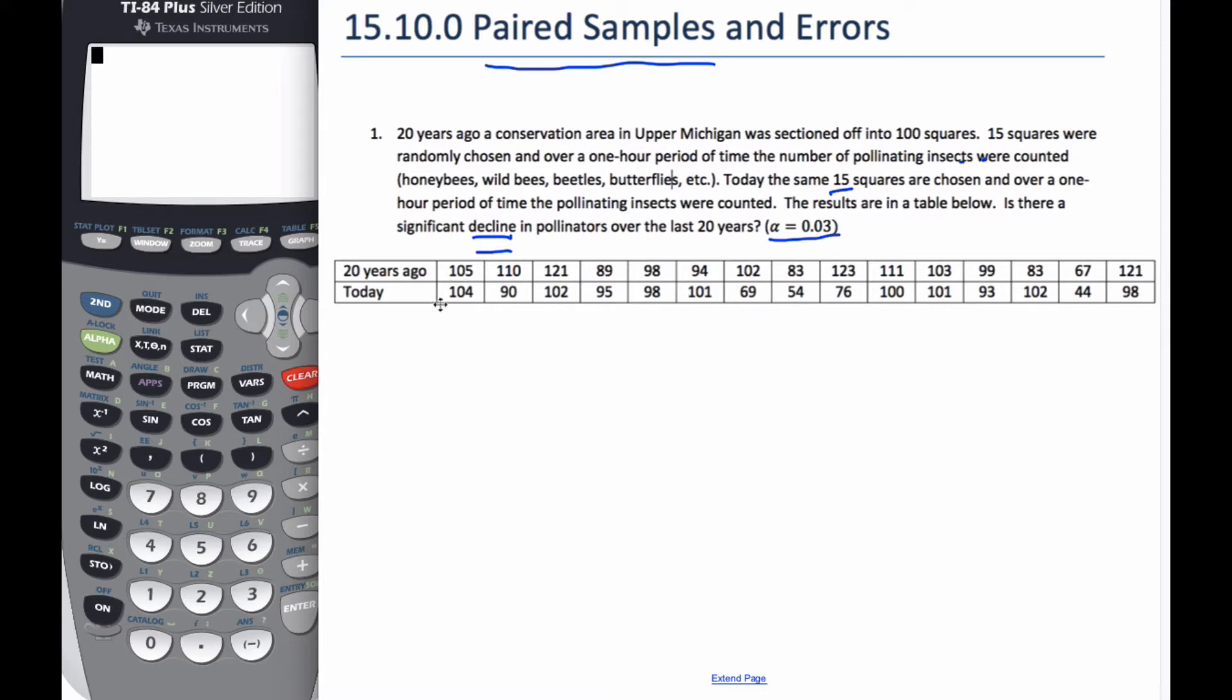So, if it's declined, that means this is less. If I go 20 minus today, then I want this to be more if it's declined. So, that's going to be bigger than 0. If it's equal to 0, they're the same, and if it's less than 0, well, there's more pollinators today than there was 20 years ago.